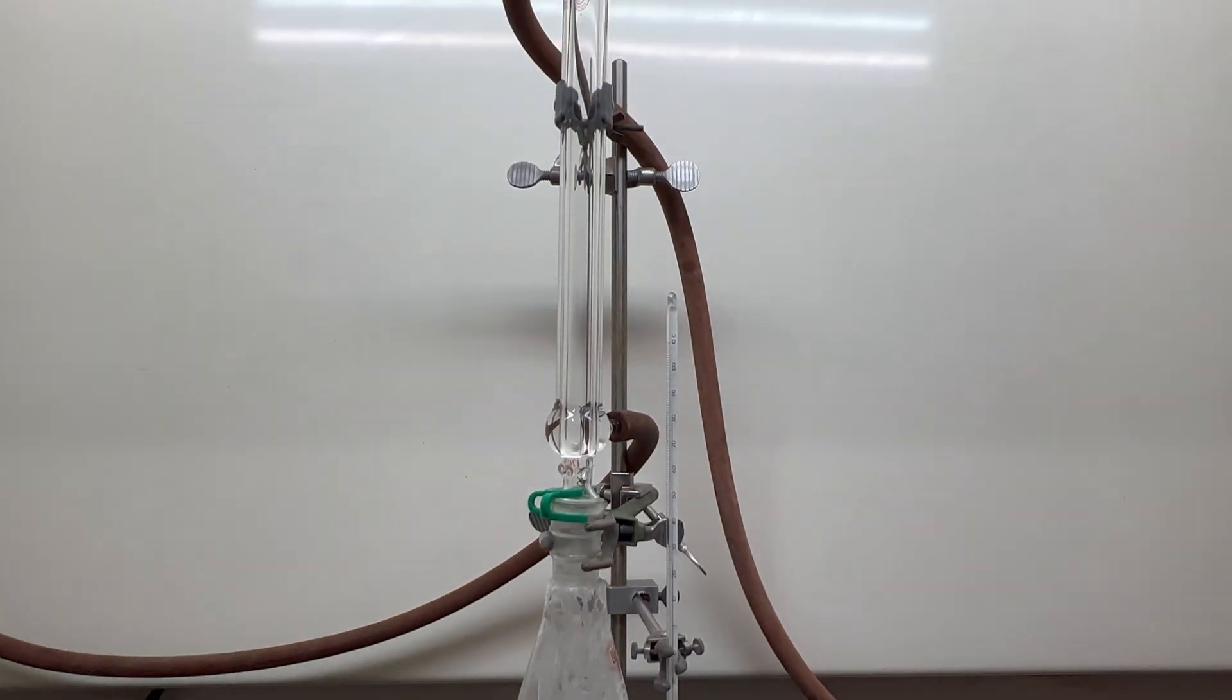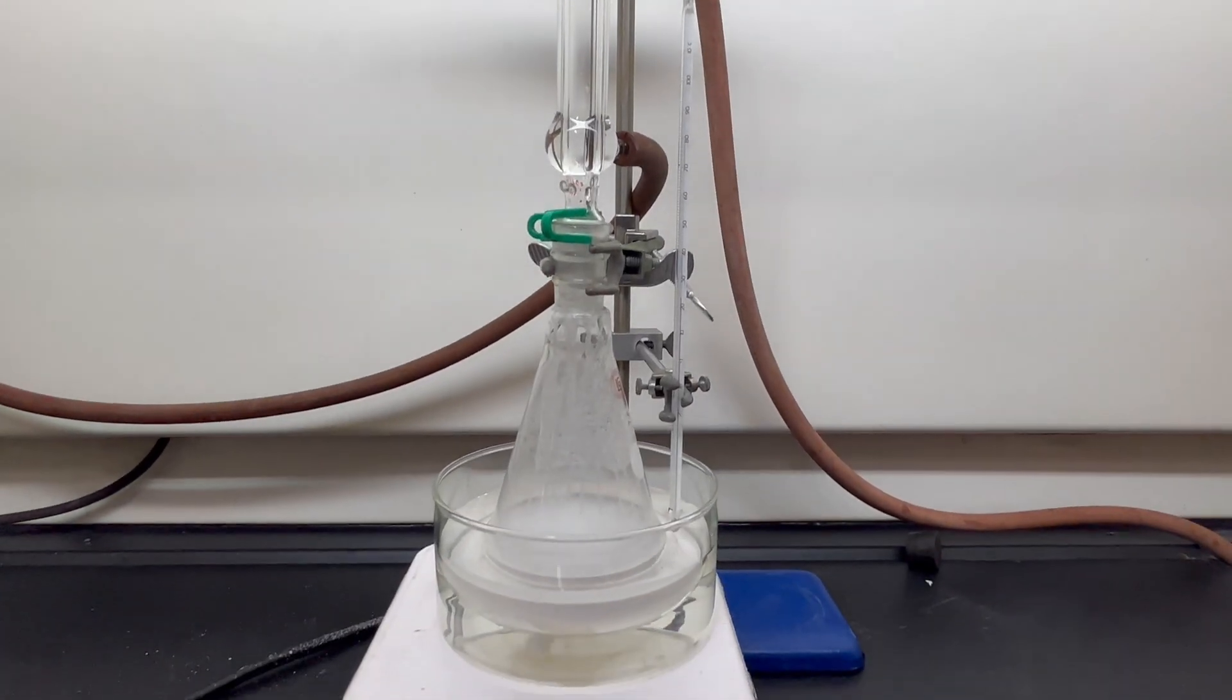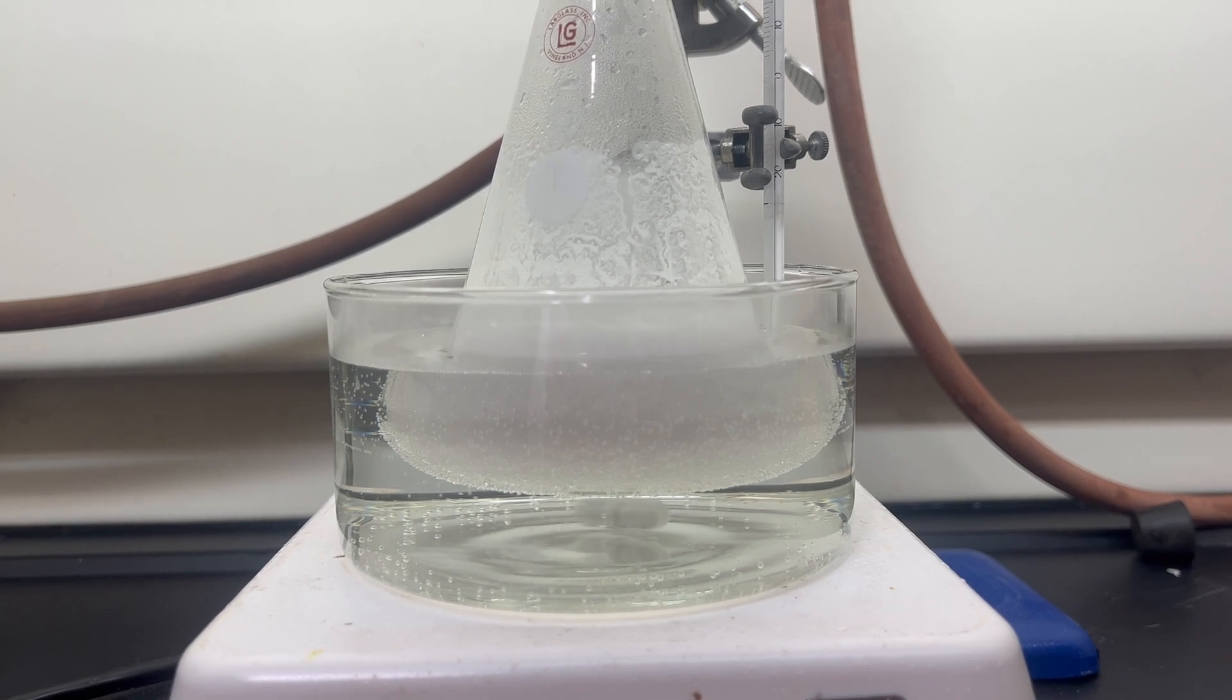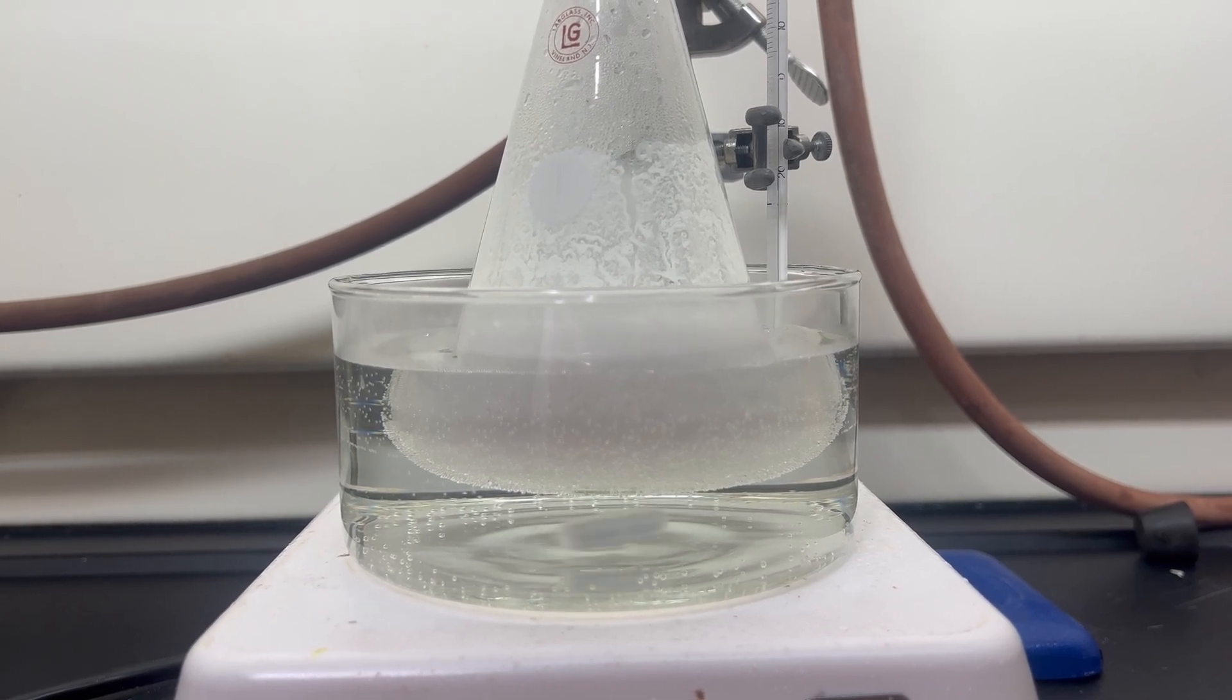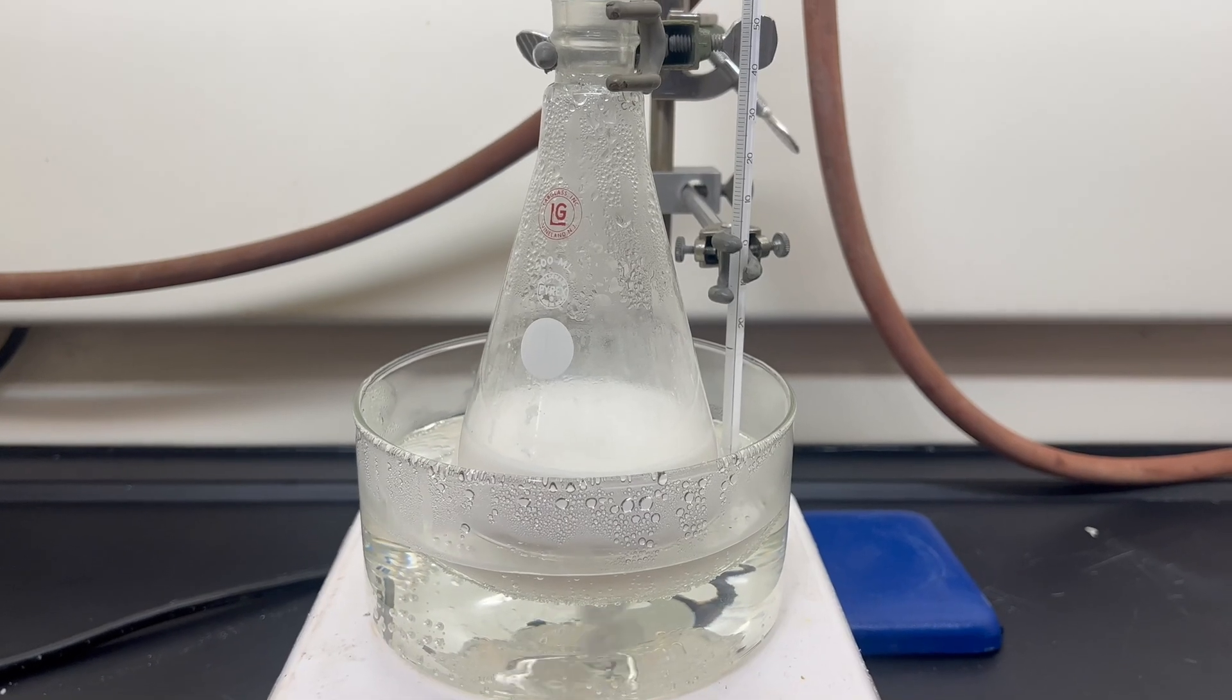A reflux condenser is then placed on top, and the hot plate is brought to 90 degrees Celsius, and stirring is increased. The calcium hydroxide is in excess to the heptachloropropane. This means the reaction will always be in a basic solution, driving the reaction to completion.